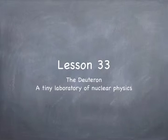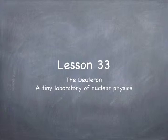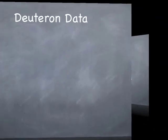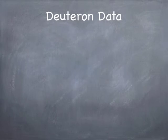Hi guys, welcome back. It's getting near the end here — we're on lesson 33. Today we're going to cover a pair of lessons on the deuteron and nuclear physics. Today we'll talk about how to understand the deuteron in terms of both the data we have about its bound state and about elastic scattering. Next time we'll talk about inelastic scattering, in particular neutron capture. One thing at a time — let's review the situation with respect to data about the deuteron.